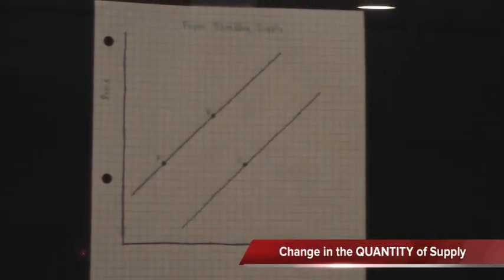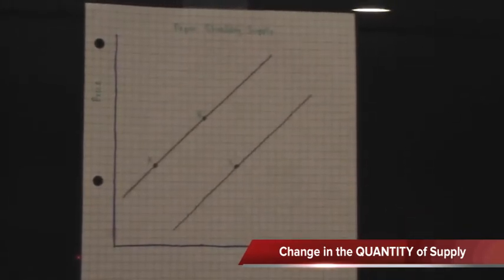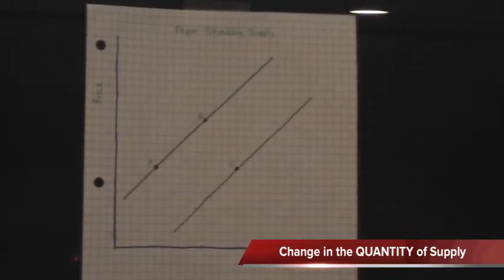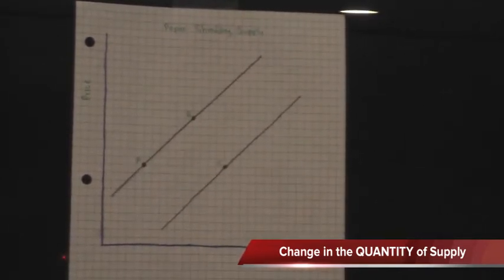The shift from point B to point A shows a change in the quantity of supply because the decision to supply less was directly related to the price they could get for that service.